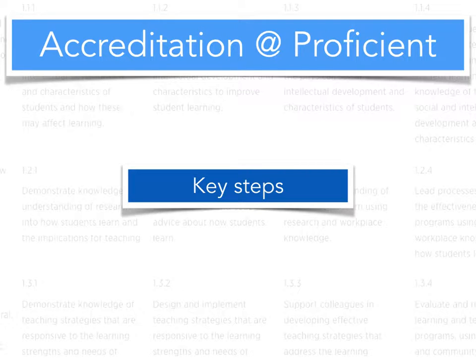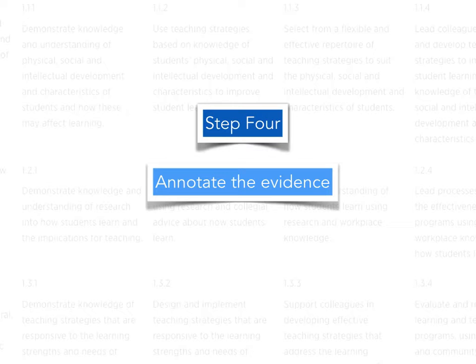This video will provide an overview of Step 4 on the road to becoming accredited at Proficient. Step 4 is annotating the evidence, and this is one of the biggest steps in the process.